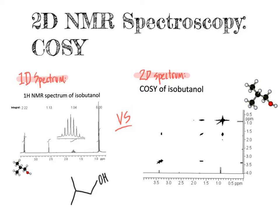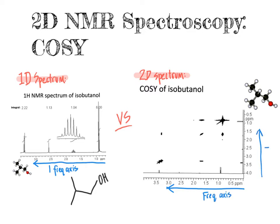With a one-dimensional NMR spectrum, such as the one on the left here, which is the proton NMR spectrum of isobutanol, what you will notice is that there is one frequency axis — and that's going to be true for all 1D NMR experiments. On the other hand, in a 2D NMR spectrum, such as the correlation spectroscopy spectrum shown on the right, there are two frequency axes: one running horizontal and another running vertical, hence making it a two-dimensional plot.